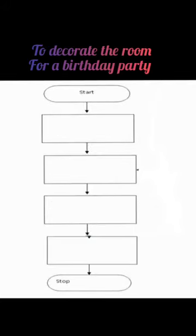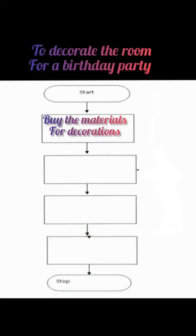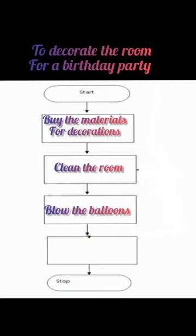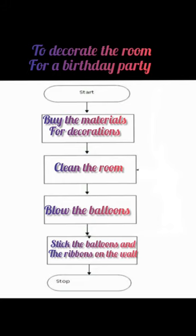Next, decorate the room for a birthday party. Steps: first, buy the material for decorations; second, clean the room; third, blow the balloons; and fourth, stick the balloons and ribbons on the wall.